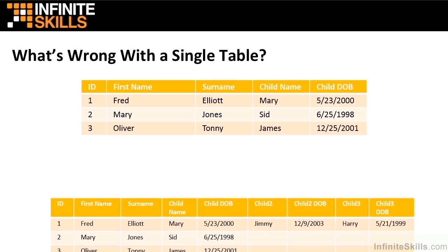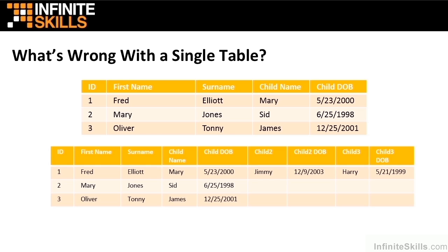We then have to further restructure, adding in a child three column and a child three date of birth column. You can see the problem here — every time somebody breaks what effectively is the maximum number of children you can have, we have to restructure the database.